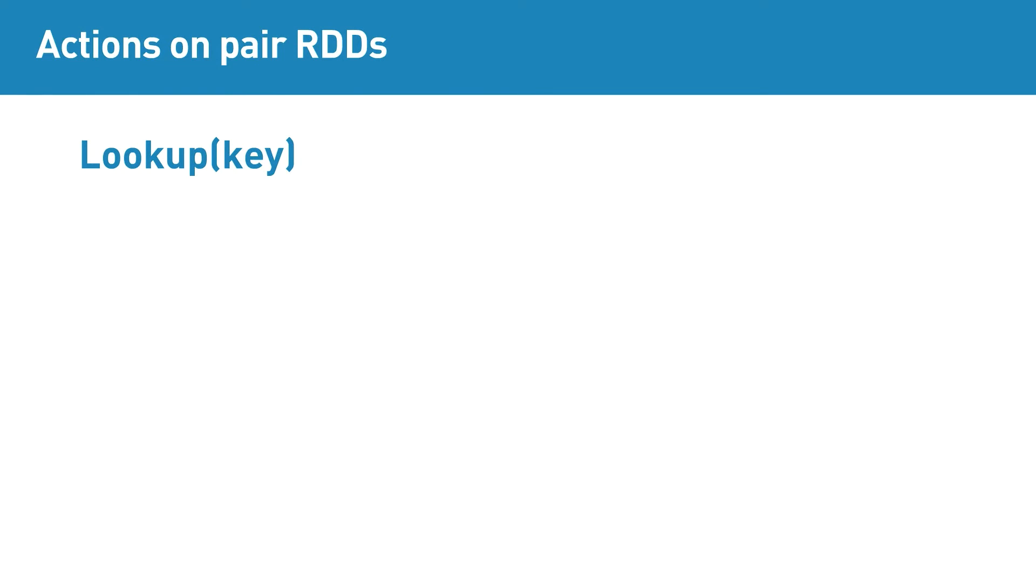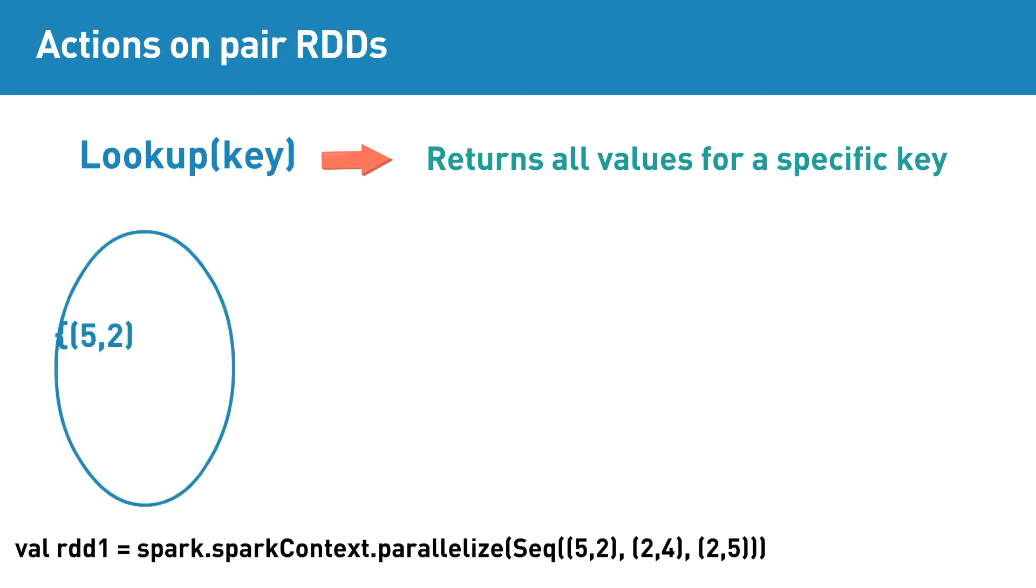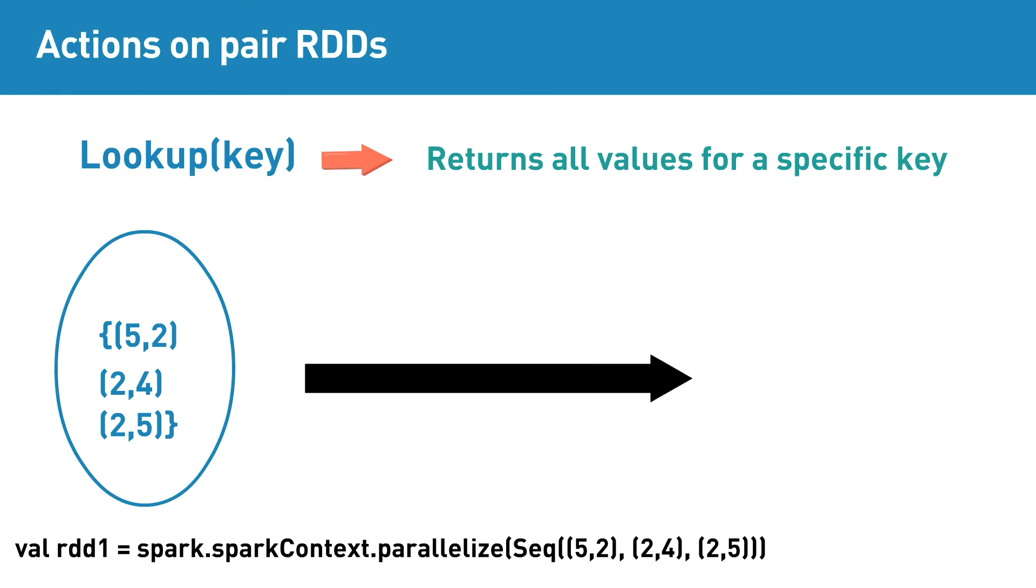Lookup key is a pair RDD action that returns all values for a specific key. This takes a key as the parameter. Then it returns the list of values corresponding to the provided key. For instance, if input RDD contains elements [5,2], [2,4], [2,5], then applying lookup of 2 action will return array of 4, 5.